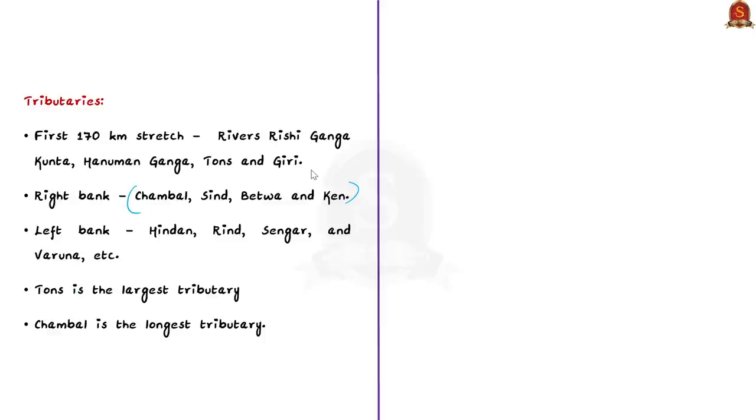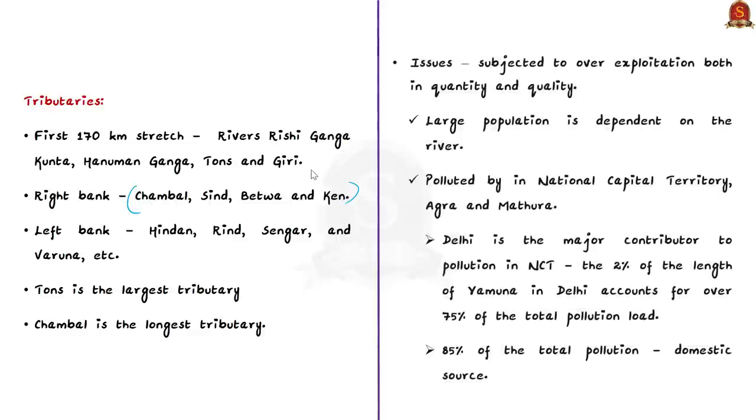One of the major issues with the river is that it has been subjected to over-exploitation. This Yamuna river is exploited more in terms of quantity and quality. Large population is dependent on the river. When you talk about quality, this river is polluted by the inhabitants in the national capital territory, Agra as well as Mathura. Delhi is a major contributor to pollution in the national capital territory. The stretch of Yamuna in Delhi is only 2% of the length of the river, but this small stretch accounts for over 75% of total pollution load. Approximately around 85% of the total pollution is from domestic sources.